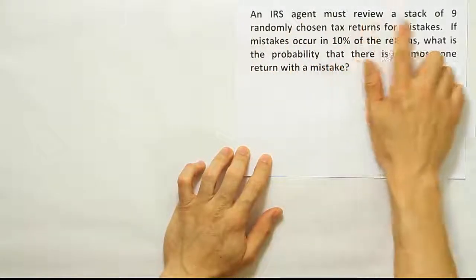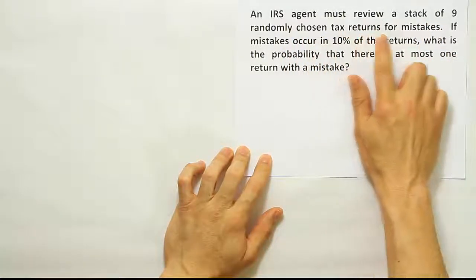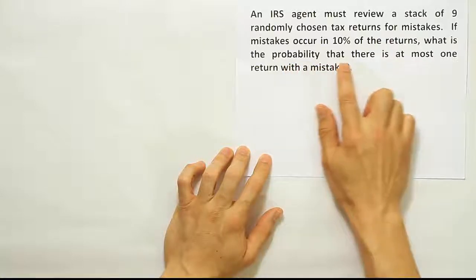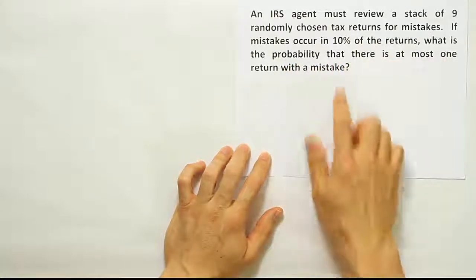An IRS agent must review a stack of nine randomly chosen tax returns for mistakes. If mistakes occur in 10% of the returns, what is the probability that there is at most one return with a mistake?